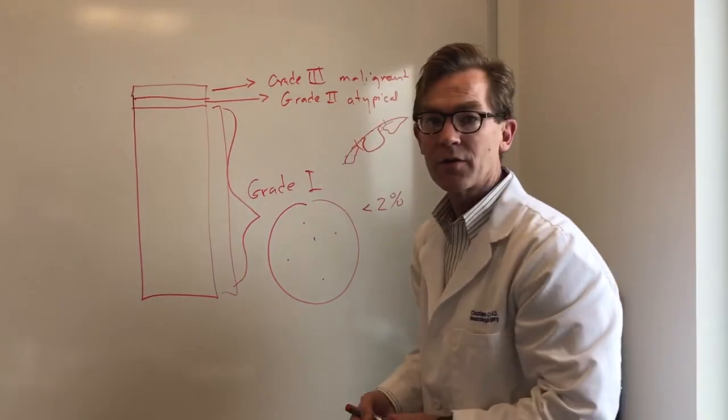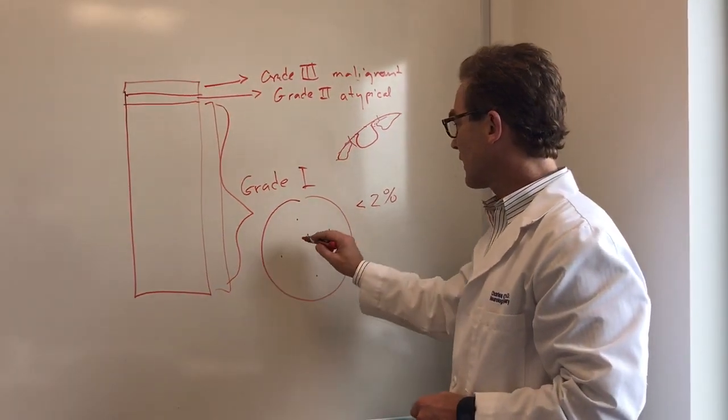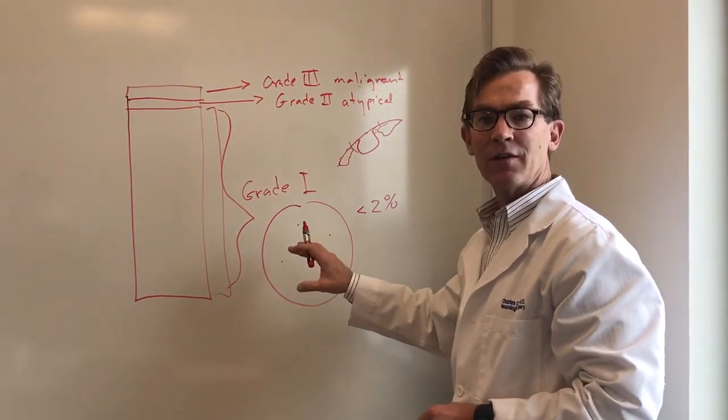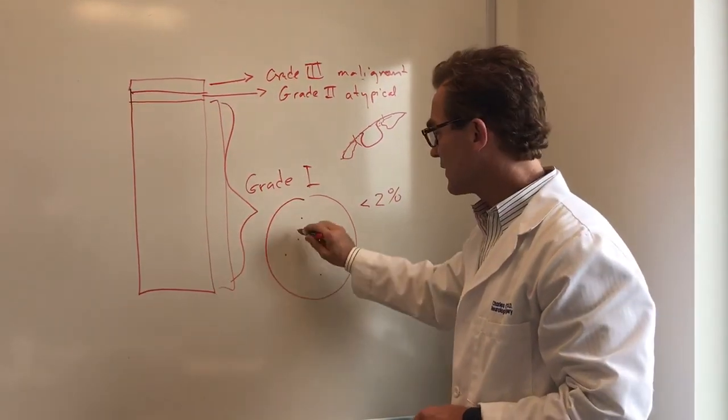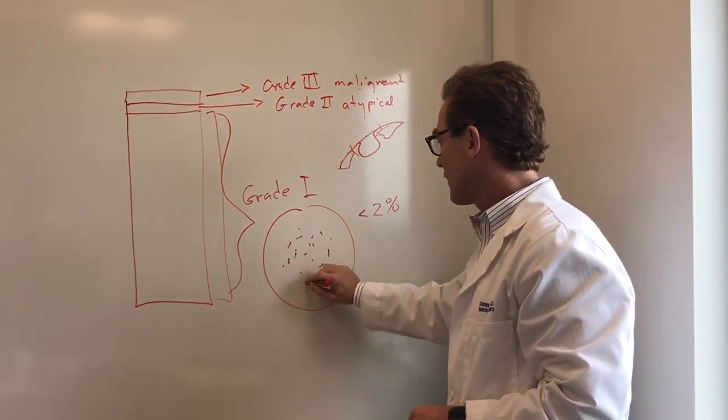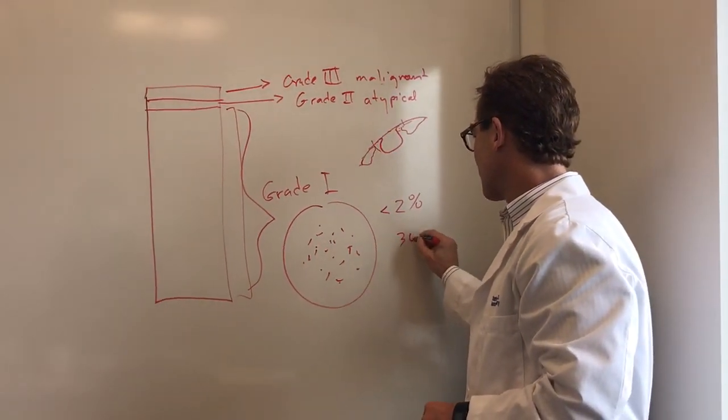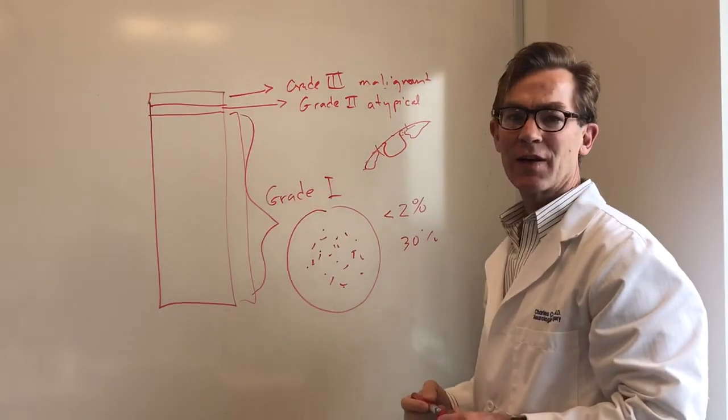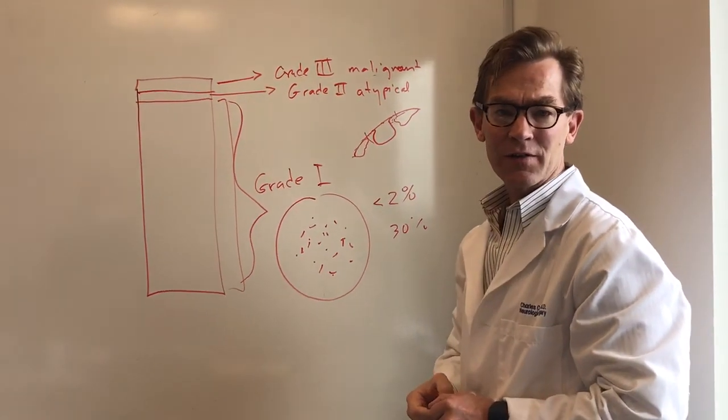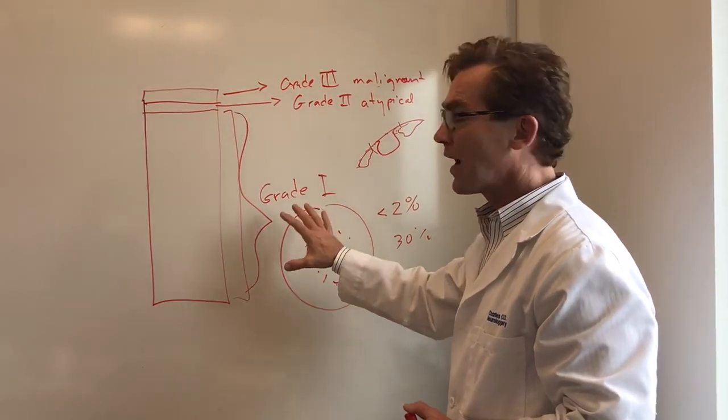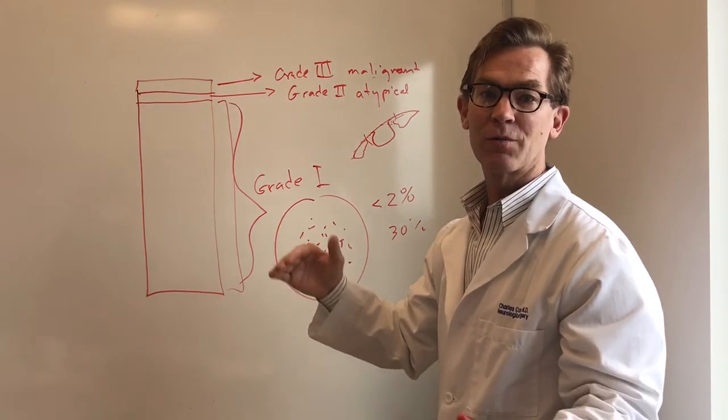And if you look at their tumors under the microscope, instead of having like one or two cells dividing in a big field, you may see that there is something like 30% of the cells at any given time dividing. And those are very aggressive and have to be treated after surgery always with radiation.